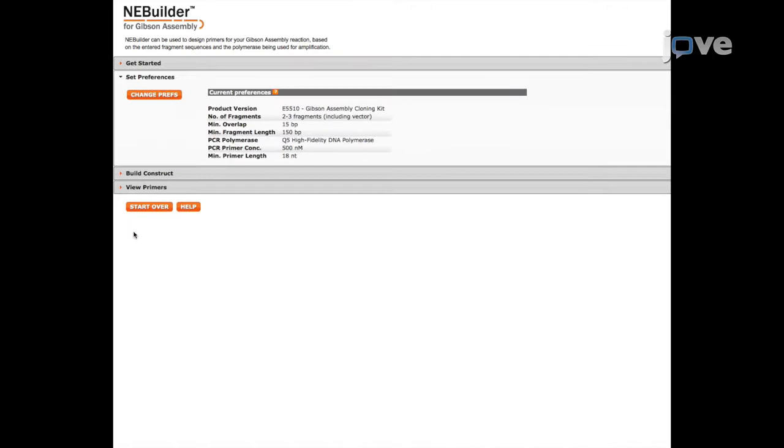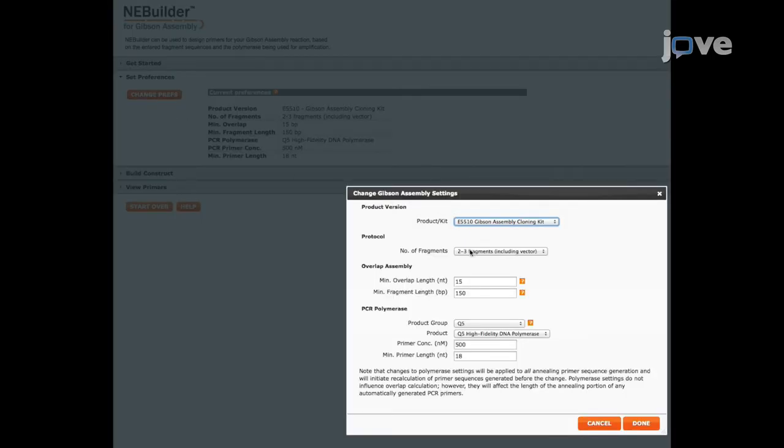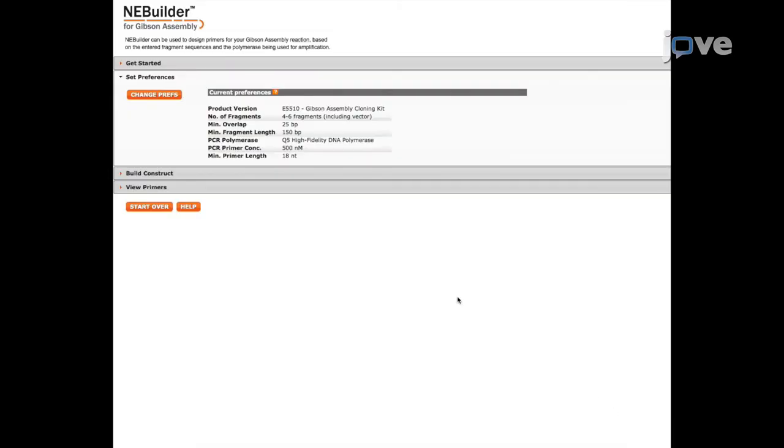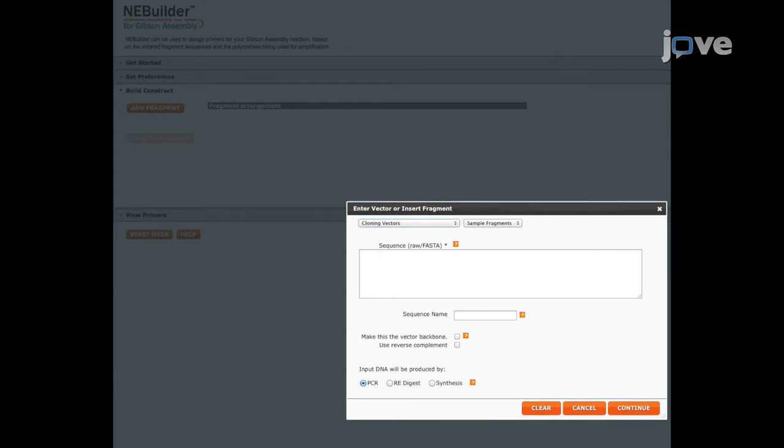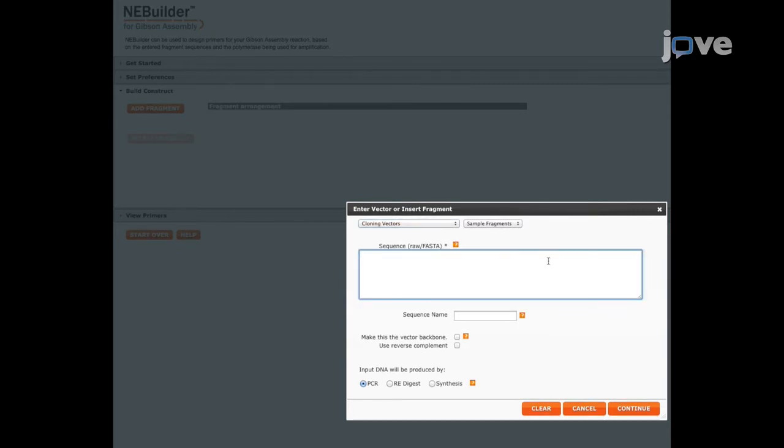Next, to access the Primer Generation tool, select the Set Preferences menu. In the Change Gibson Assembly Settings pop-up window, select the Change Prefs tab. Then, select the Build Construct menu to insert the split DNA fragments in the Primer Generation tool sequentially from the 5' to the 3' end. Open the Enter Vector or Insert Fragment window, paste the first DNA fragment representing the 5' end of the vector DNA in FASTA format, and name this DNA fragment. Choose the appropriate way to obtain the DNA fragment, then click on the Continue tab.